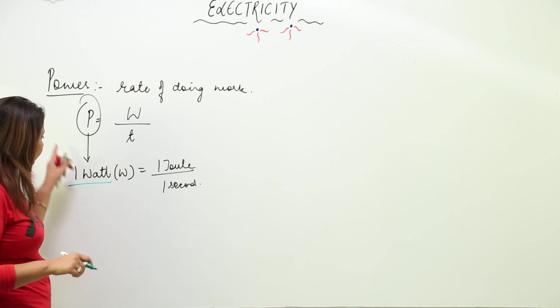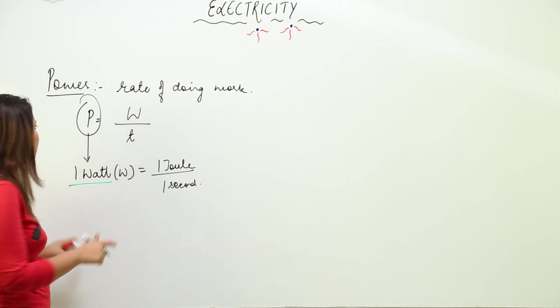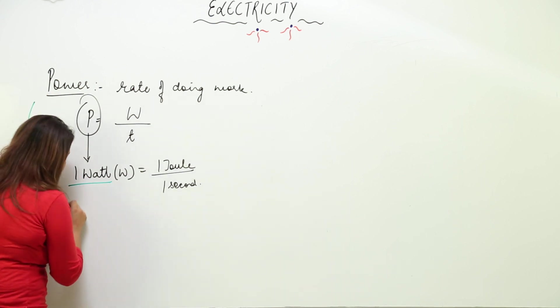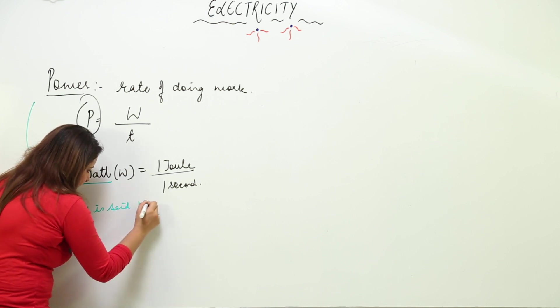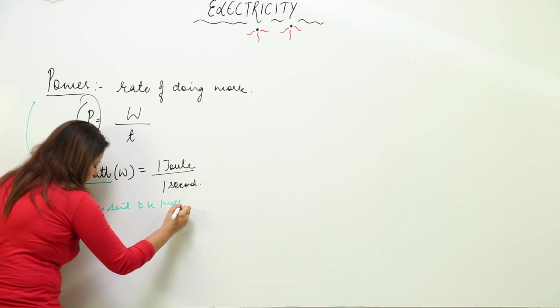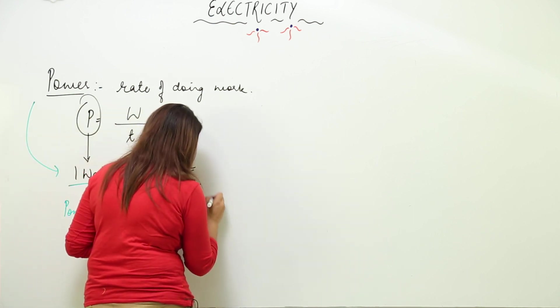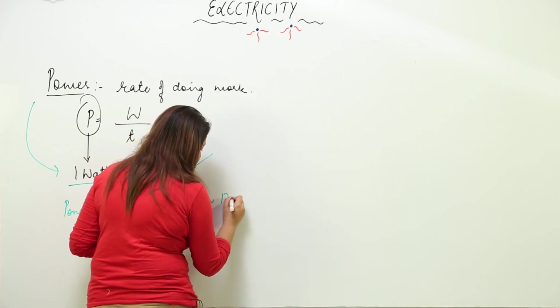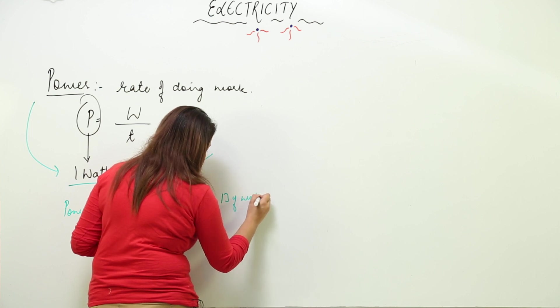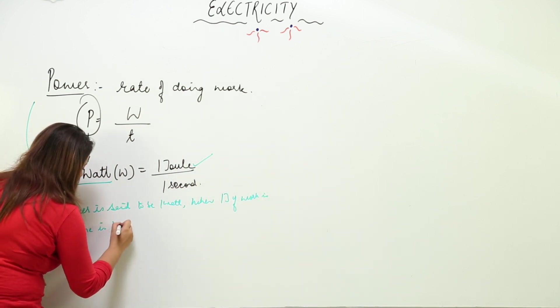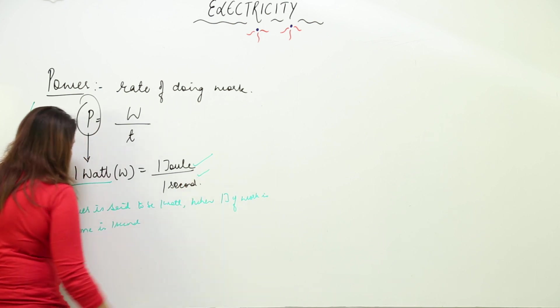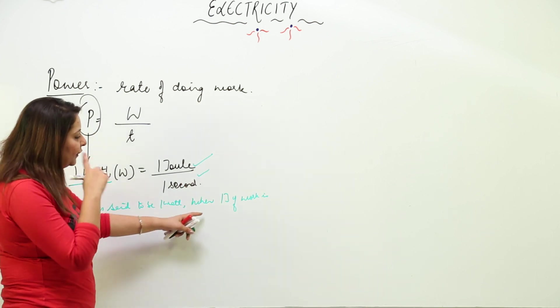Now how we define watt: power is said to be 1 watt when 1 joule of work is done in 1 second. This is the time component.